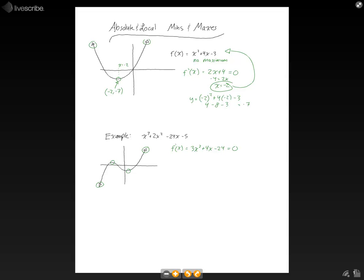Now, I don't really want to factor that. I don't think you do either, so we're going to use the quadratic formula. The quadratic formula states that x equals negative b, so negative 4, plus or minus the square root of b squared, that's 16, minus 4 times a, that's 3, times c, that's negative 24, all divided by 2 times a, which is 3.